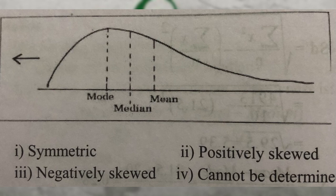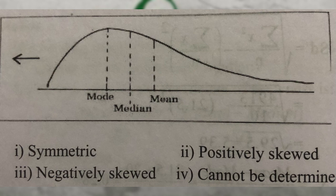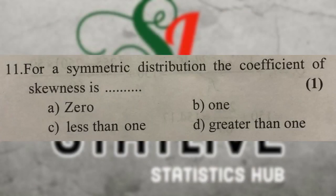What is skewness? The tail is positively skewed; the tail is negatively skewed. If the centers are equal, it is symmetric. For positive skewness, the mean is the key value. If the median is greater than the mean, the distribution is positively skewed. For a symmetric distribution, the coefficient of skewness is 0. Positive skewness is greater than 0; negative skewness is less than 0.